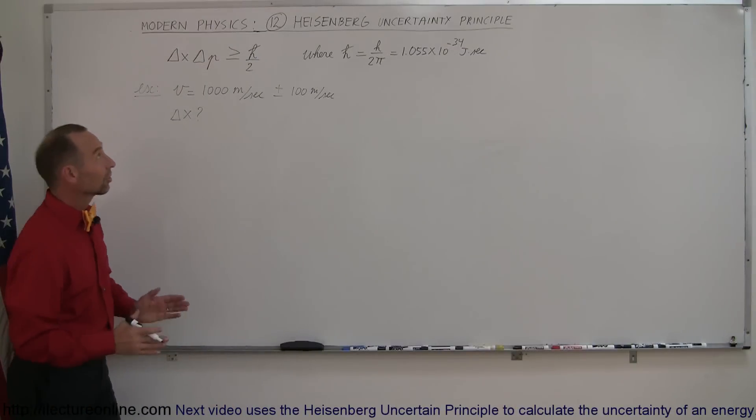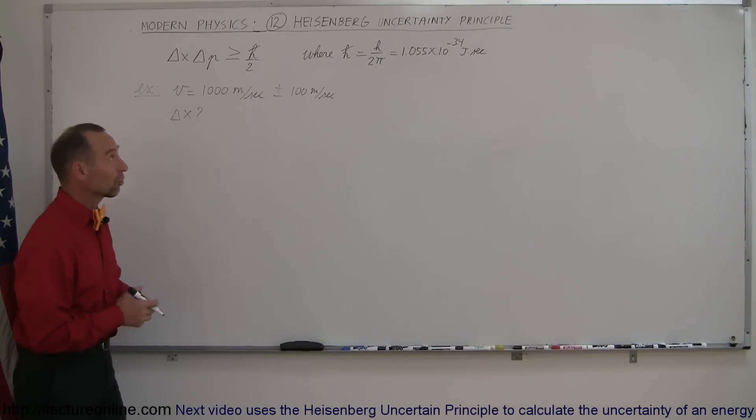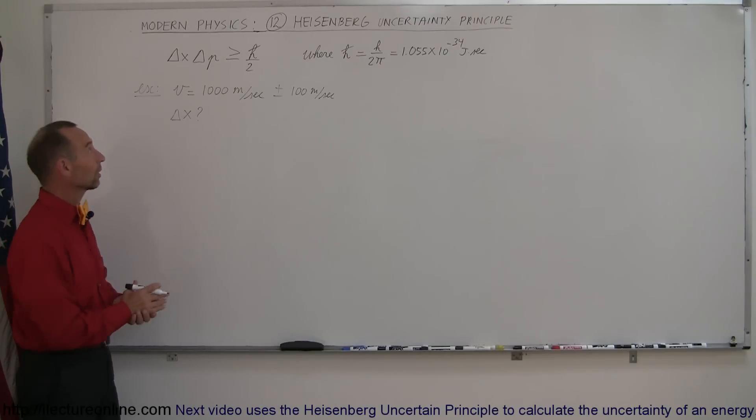Our next topic in modern physics is called the Heisenberg Uncertainty Principle. Now this is something very strange. When we're dealing with very small particles, and this is in quantum mechanics or quantum physics, very strange things happen here.